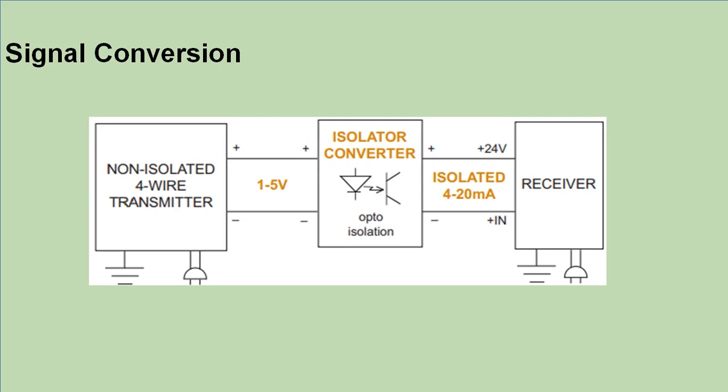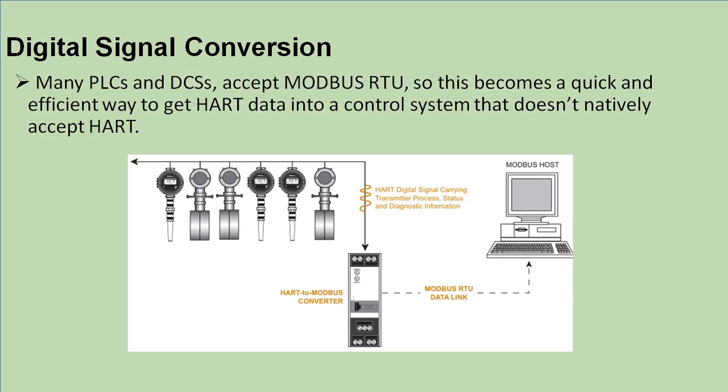For digital signal conversion, most field bus transmitters have HART field bus in addition to 4-20 milliampere signal. But many PLCs, DCSs, and systems accept Modbus RTU. One requirement of signal isolators is that if it converts the HART signal to Modbus RTU, there is an easy and efficient way to get this HART data into a control system that does not natively accept HART. Here, the signal isolator converts the HART field bus protocol to Modbus protocol.